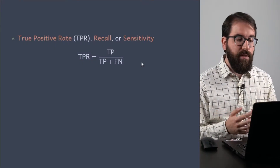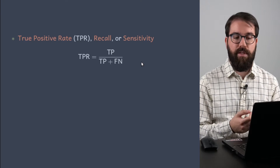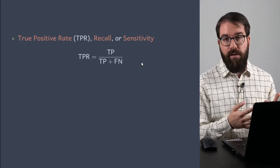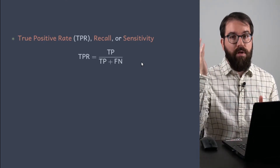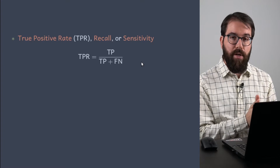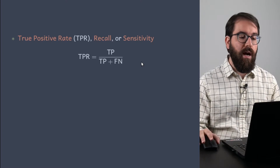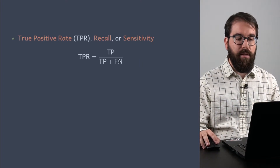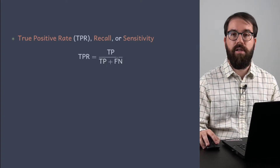Let's look into the definitions of recall and precision. Recall is something we already discussed in the previous video — it's also called true positive rate, TPR, recall, or sensitivity. The TPR or recall is what the model recalls from what it should predict from the positive class. It's the amount of true positives over the amount of actual positives, where actual positives are TP plus FN — true positives plus false negatives.